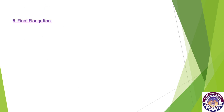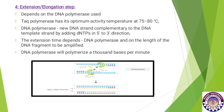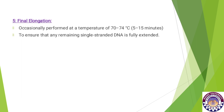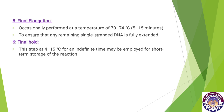Next is the final elongation, which is not a regular step. It can be performed occasionally at about 70 to 74 degrees centigrade for 5 to 15 minutes, to ensure that any remaining single-stranded DNA is fully extended. After this, there is a final hold at 4 to 5 degrees centigrade for an indefinite time, which may be used for short-term storage of the reaction.